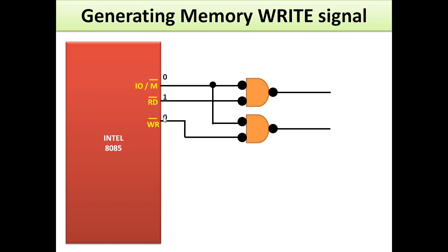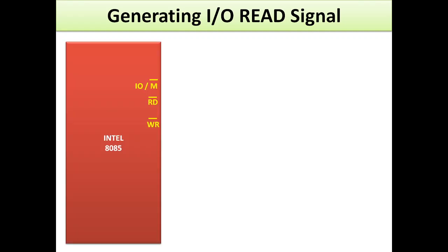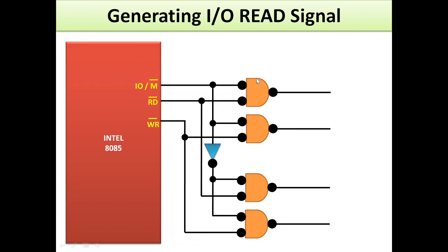For memory write, a similar circuit is used. When the processor is in write mode, WR̄ goes low while RD̄ is disabled. The NAND gate receiving IO/M̄ (0) and WR̄ (0) produces a zero at its output, giving us the memory write signal.